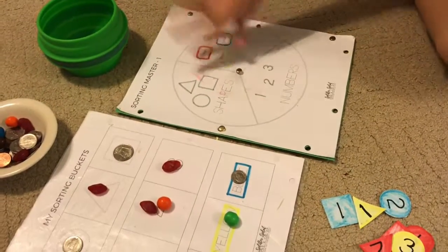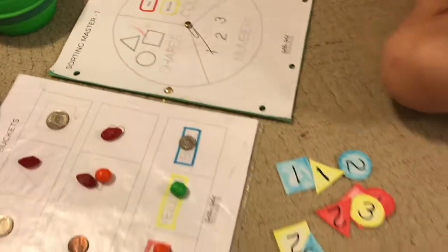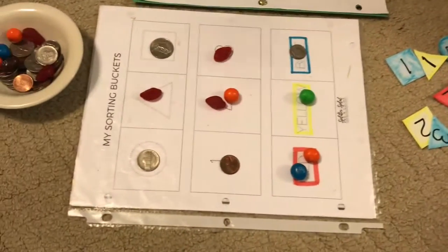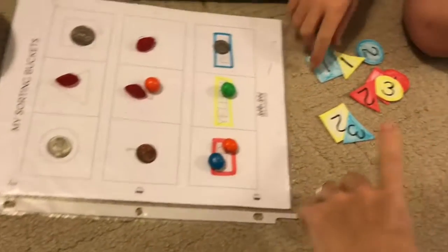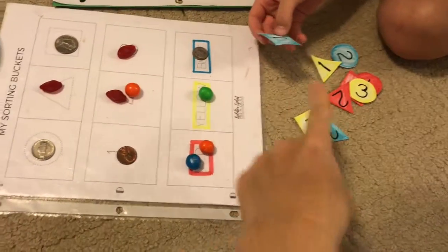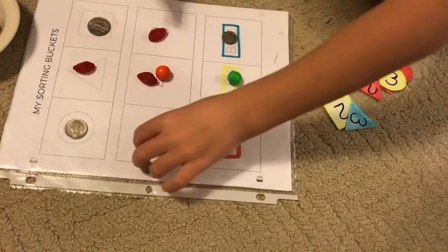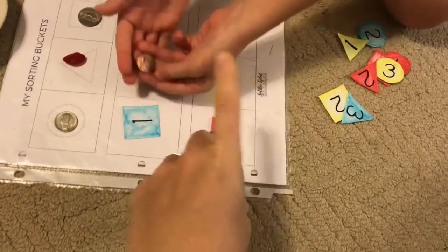You ready, Ava? The first thing you're going to do is spin this. Now what did you spin? Numbers. So what do you have to do now? Remember which one's a number. It's in the middle. So you pick up one of these, and you put it on one of the numbers, and you get a treat.